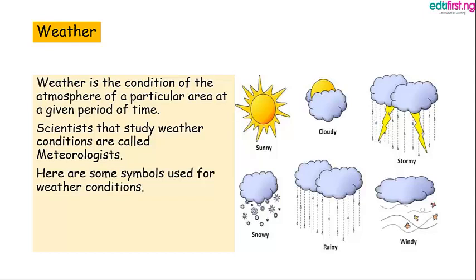Scientists that study weather conditions are called meteorologists. Here are some symbols used for weather conditions. You can see the symbols: sunny, cloudy, snowy, rainy, windy, and stormy.